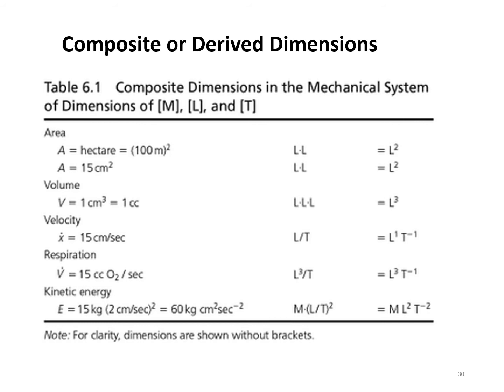Composite or derived dimensions. Area, just L squared. Volume, L cubed. Velocity, length per time. Respiration, volume per time or length cubed per time. And kinetic energy is in units of mass times length per time squared. That means the energy is going to be in the units of mass per area per second squared.